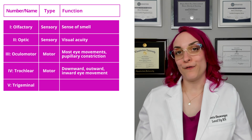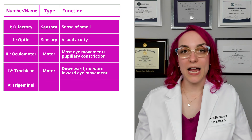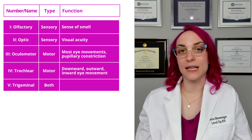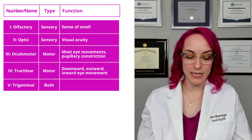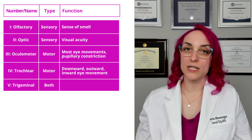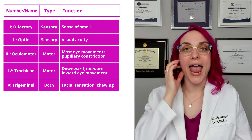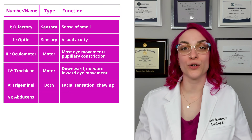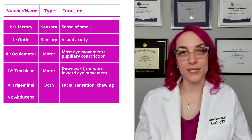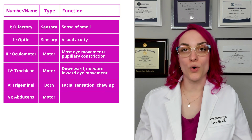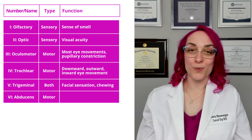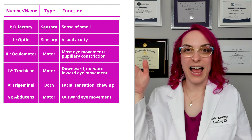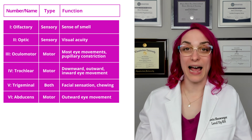Cranial nerve 5 is trigeminal, and trigeminal has both a sensory and motor component. Its job is facial sensation and chewing. Cranial nerve 6 is abducens, which is a motor-only neuron, and this one controls outward eye movement — it abducts the eye.